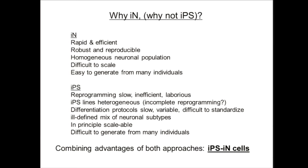Contrasting iN cells and iPS reprogramming: iPS reprogramming is slower, much more inefficient, and more laborious. The main problem in the field is really line-to-line variability and identifying fully reprogrammed iPS clones. Conventional differentiation usually yields mixtures of neuronal subtypes. The great advantage of iPS is scalability, and we'll see how far the technology develops to also be scalable from many individuals.